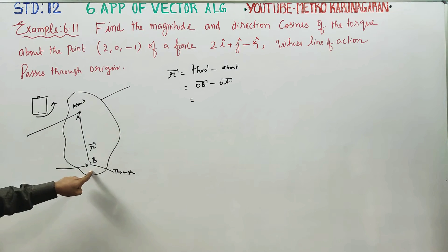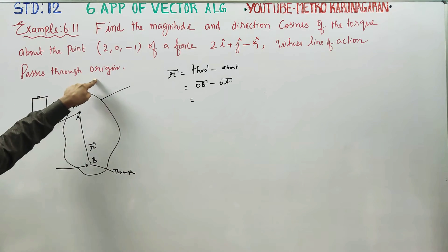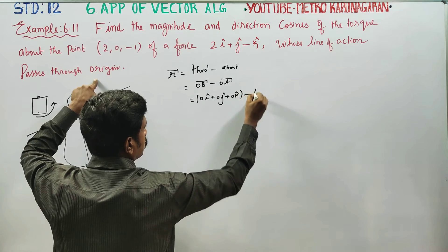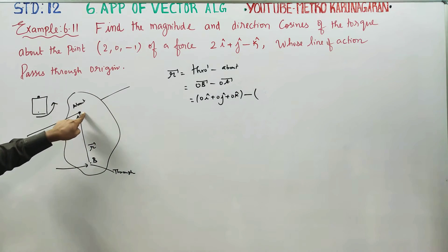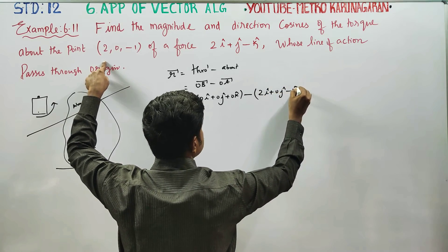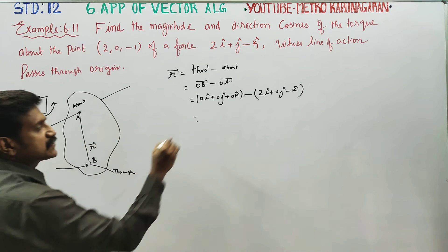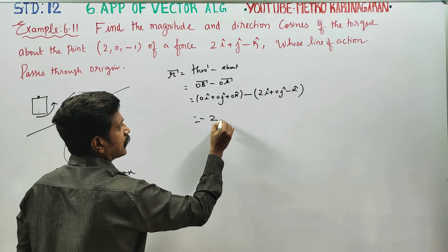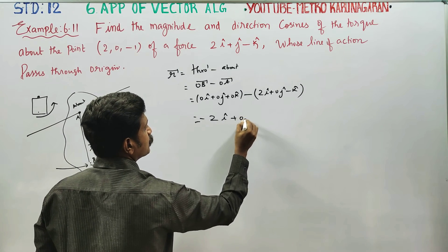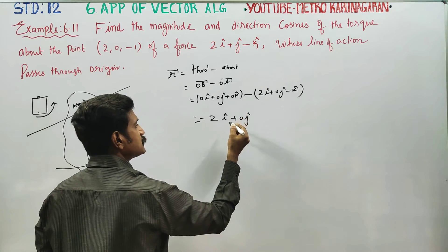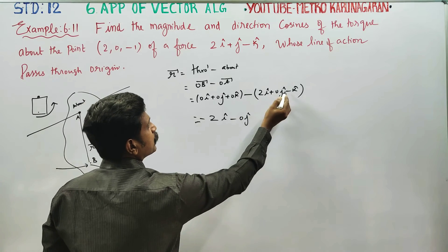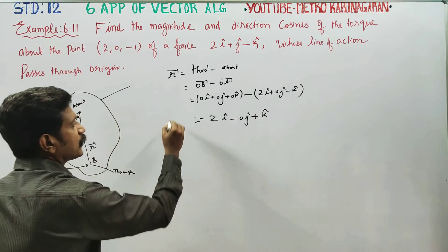The force passes through the origin — that is point B is the origin. About is the given point A, which is (2i + 0j − k). So R-vector = 0 − (2i + 0j − k) = −2i − 0j + k. This is the R-vector.